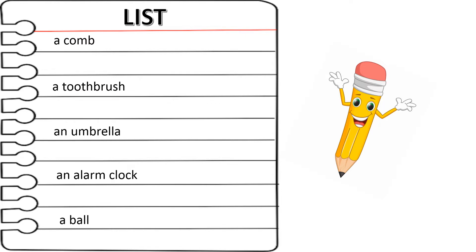A comb, a toothbrush, an umbrella, an alarm clock, a ball. Children, did you notice there are few words in this list which have 'a' before them and some have 'an' before them?